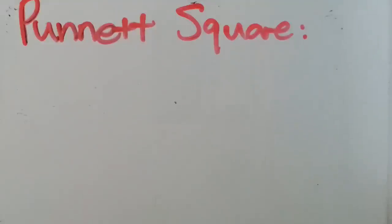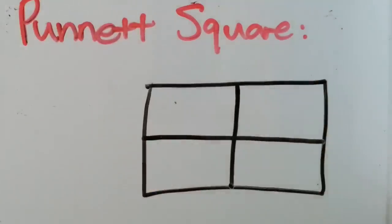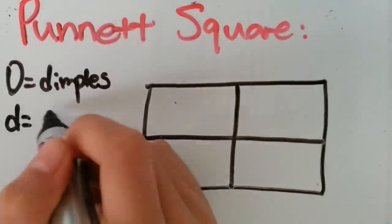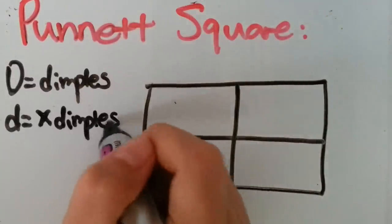A Punnett square is a simple chart that shows all the possible outcomes of a genetic trait between parents. For dimples, capital D stands for the presence of dimples and lowercase d stands for no dimples.